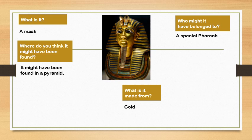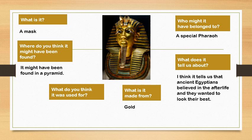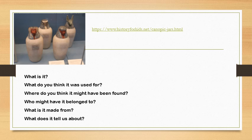Who might it have belonged to? From our last lesson, I know that pharaohs are the kings who ruled Ancient Egypt. So I think this, because it is gold, must have belonged to a special pharaoh. What does it tell us about? I think it tells us that Ancient Egyptians believed in the afterlife and that they wanted to look their best. When pharaohs die, their bodies are put in a pyramid, so the pharaohs must believe that they go somewhere after they have died and they'd want to take this with them. What do you think it was used for? To place over the faces of pharaohs who had died. Those are my predictions about that mask.